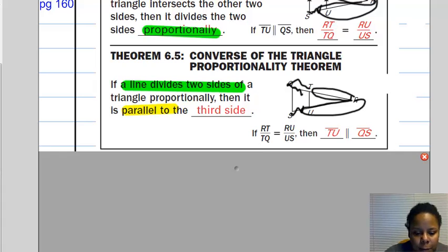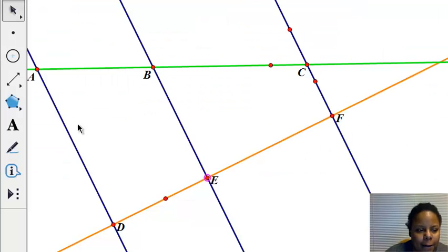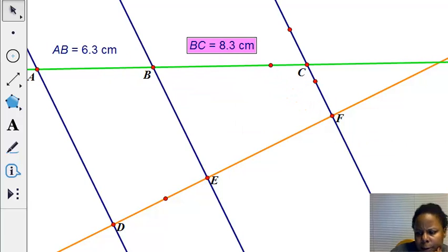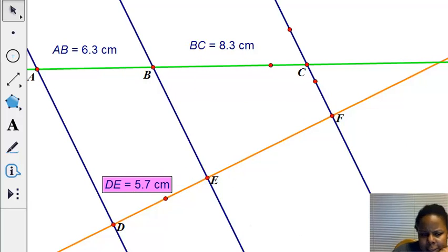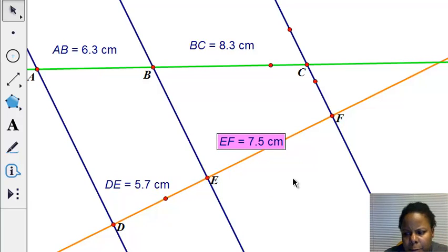Now let's take a look at something else that's interesting, another partition. So here I have three parallel lines, and I don't have a marking to indicate they're parallel, but trust me, they're parallel. And I have two transversals. And if you notice, the transversal line segments are also being partitioned or broken up by the parallel lines. So over here we have AB is 6.3, BC is 8.3, then over here with the orange line we have DE is 5.7, and EF is 7.5. Nothing seems very interesting about these numbers, there's no equal numbers here.